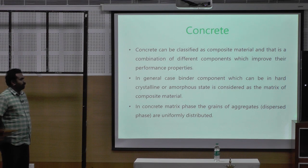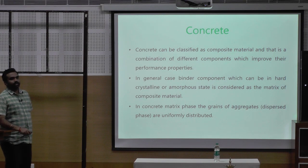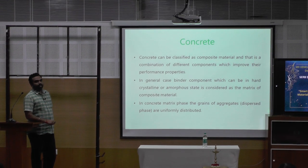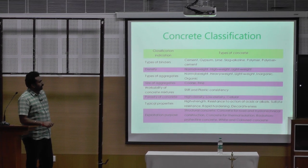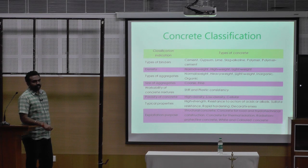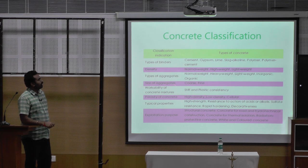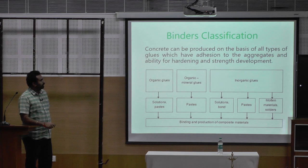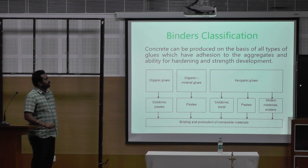A material which is supposed to be called a binder should have a property of forming a hard crystalline or amorphous state, which forms a matrix of a composite material. Looking at the classifications of concrete, we have various types of binders. In previous days, before we got the terminology 'cementitious material' or 'mineral material,' we used this as a binder — in many places we call this a glue. Concrete can be produced on the basis of all these types of glues, which have the nature of additions to aggregates and the ability for hardening and strength development. We have organic glues, organic-mineral, and inorganic glues. Finally, it can be in the form of a solution, paste, or solution bond paste, and we get a composite material.